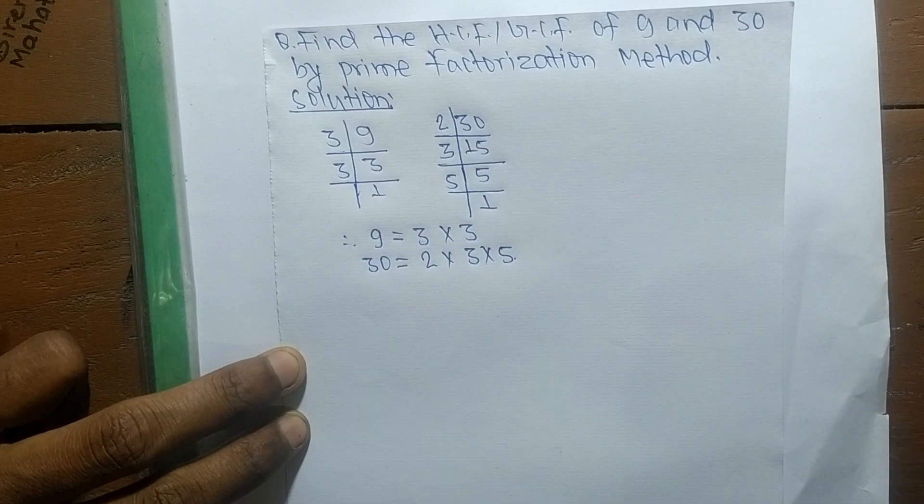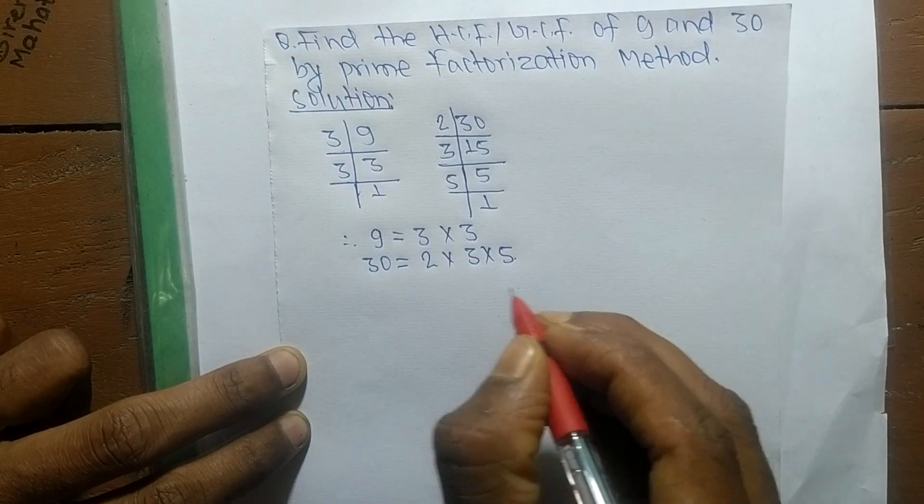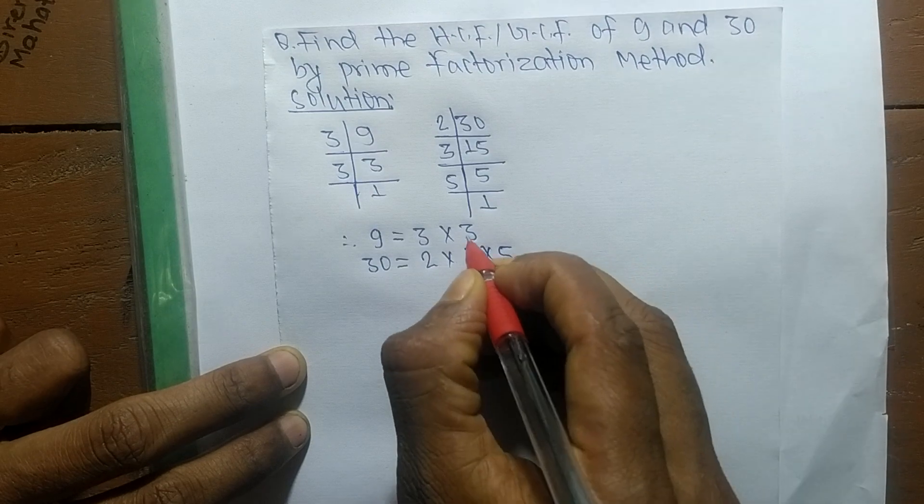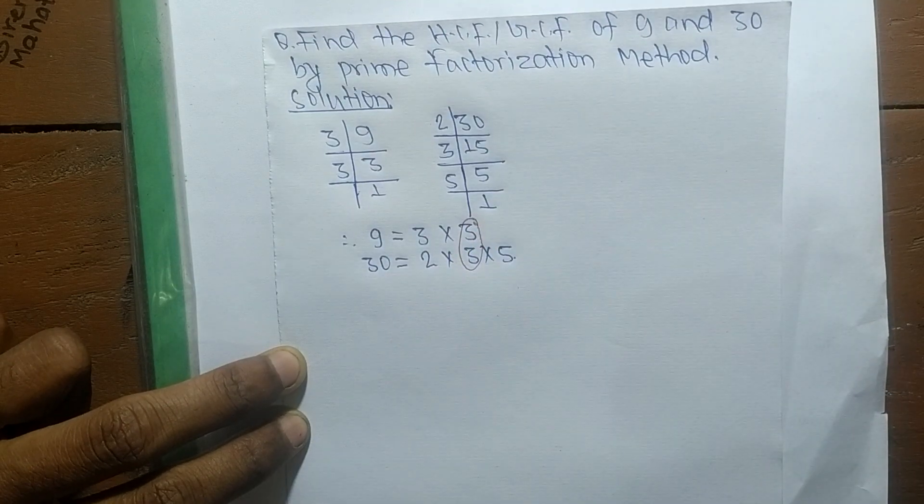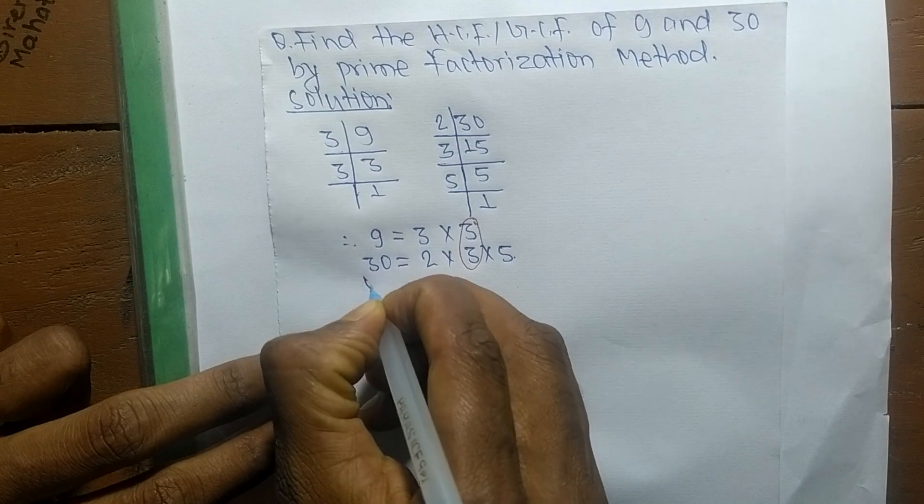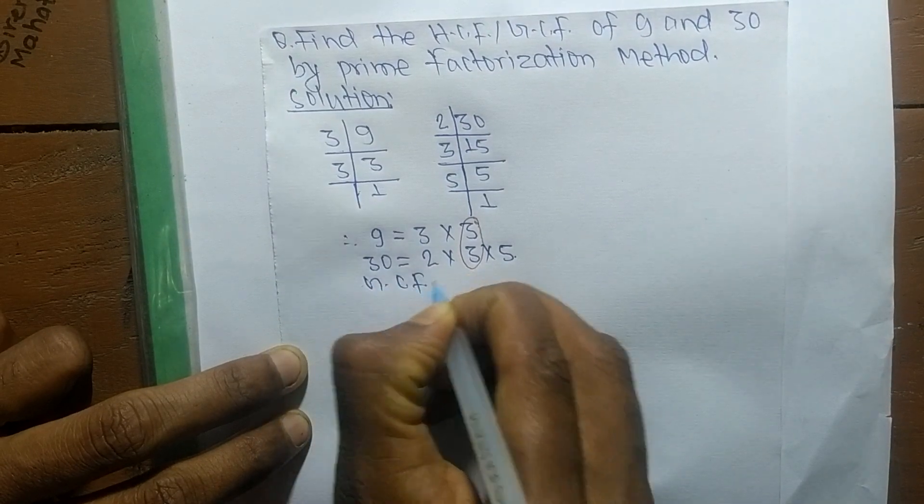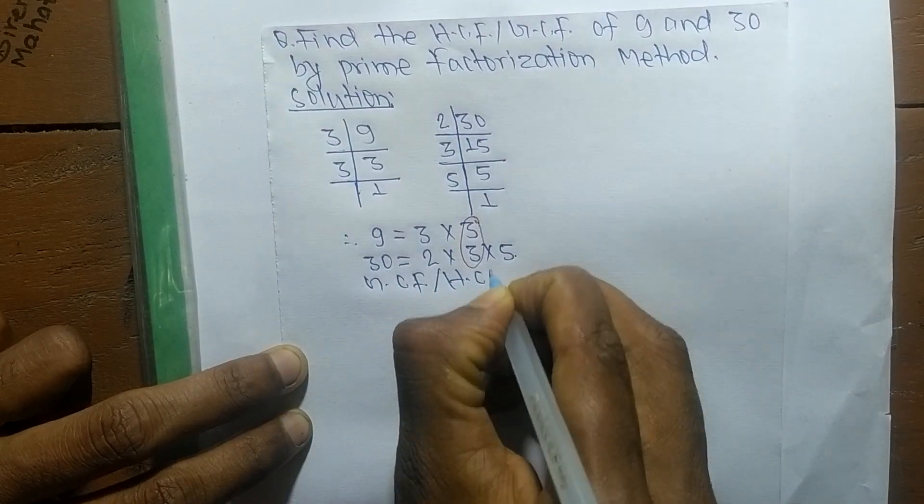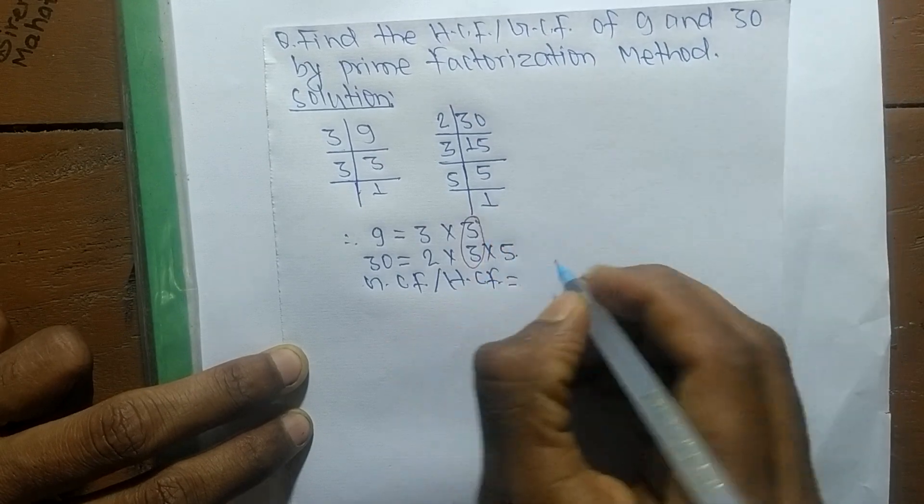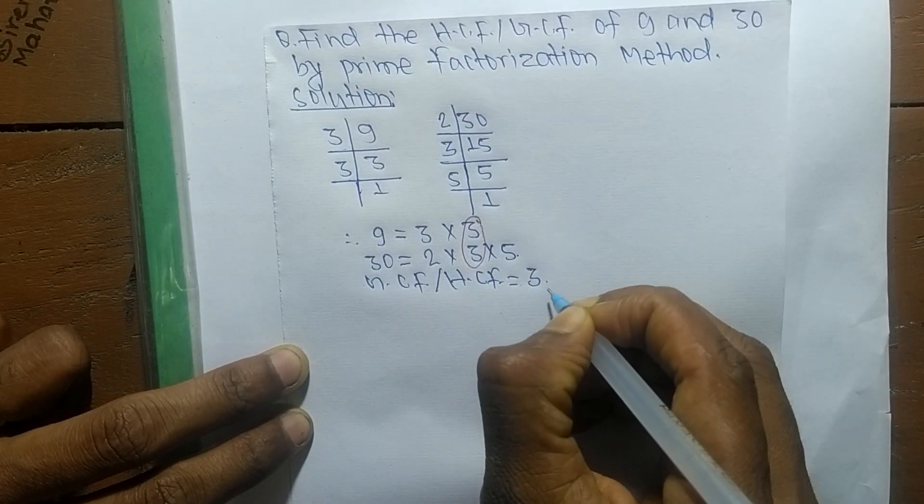After writing all the prime factors, now we have to find out the common in both. Common here is 3, and the GCF or HCF is the product of all the common factors. The common here is 3, so 3 is the GCF or HCF of 9 and 30.